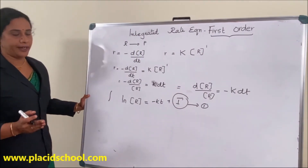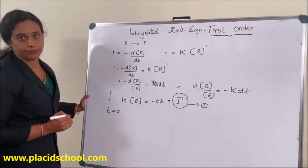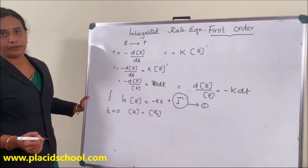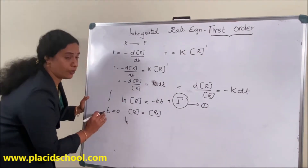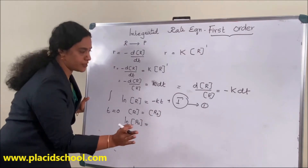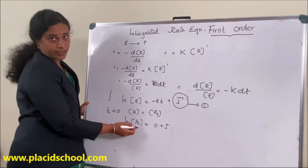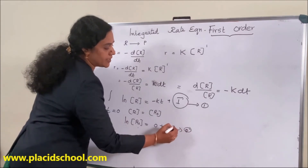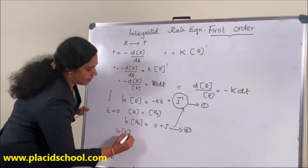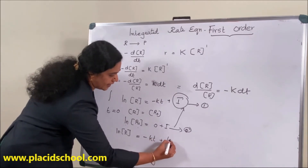We identify the value of i using initial conditions. At t equal to zero, concentration R becomes R₀. Substituting: ln R₀ equals minus K into zero plus i, so the term minus K times zero becomes zero. Therefore i equals ln R₀. Substituting back into equation 1 gives: ln R equals minus Kt plus ln R₀.